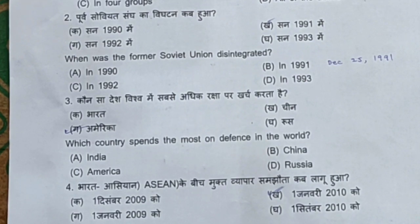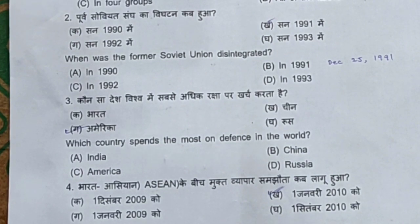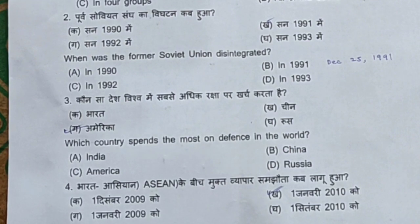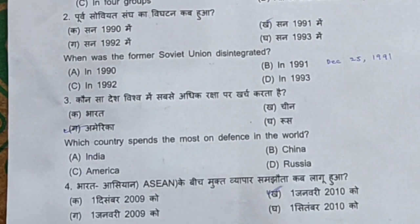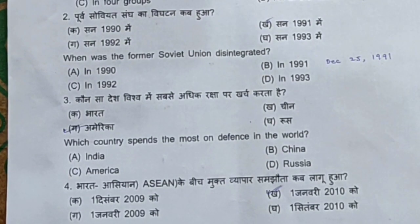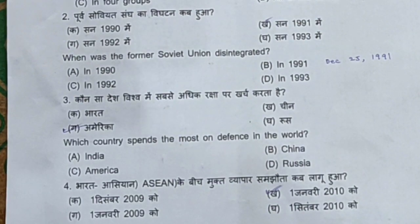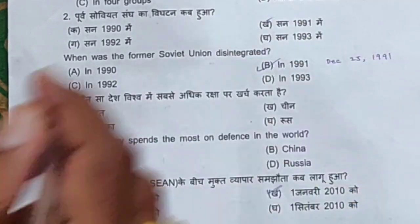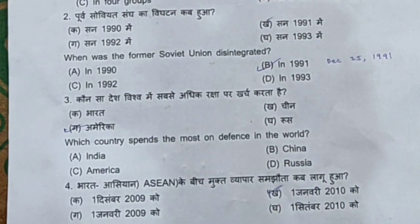Question 2: When was the former Soviet Union disintegrated? Options: in 1990, in 1991, in 1992, in 1993. Students, the former Soviet Union was disintegrated on 25 December 1991. So option B, in 1991, is correct.